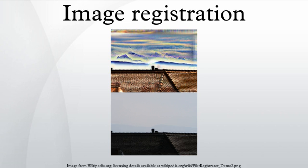Frequency domain methods find the transformation parameters for registration of the images while working in the transform domain. Such methods work for simple transformations such as translation, rotation, and scaling. Applying the phase correlation method to a pair of images produces a third image which contains a single peak. The location of this peak corresponds to the relative translation between the images. Unlike many spatial domain algorithms, the phase correlation method is resilient to noise, occlusions, and other defects typical of medical or satellite images. Additionally, the phase correlation uses the fast Fourier transform to compute the cross-correlation between the two images, generally resulting in large performance gains.